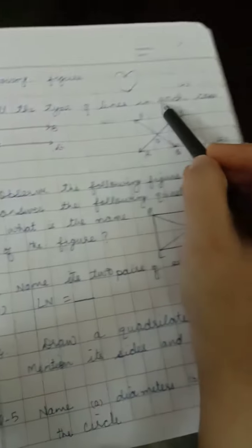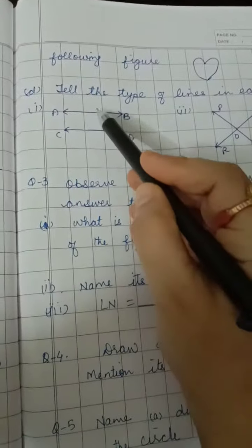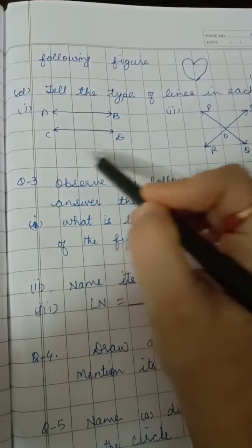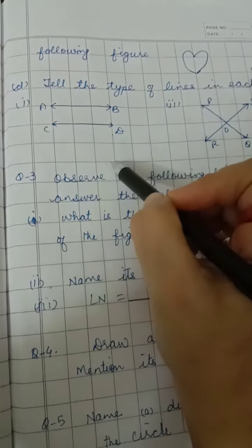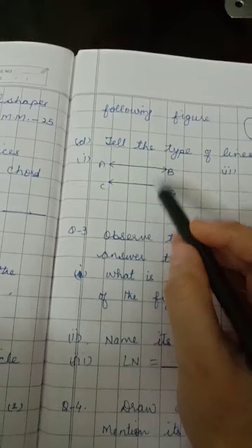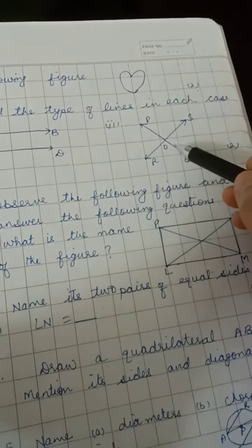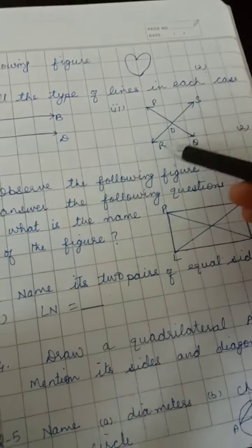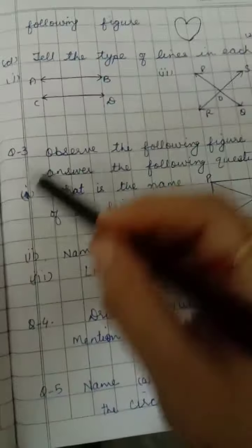Part D: Tell the type of lines in each case. F, B and C, D—you have to write the name of these two lines. P, Q and R, S—you have to write the name of these two lines also.